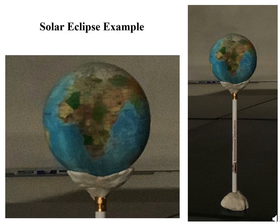Since my model Moon is slightly too big, I had to move the Earth and Moon a little bit closer to get it to work. Before I did that, the Moon cast too big of a shadow and the whole Earth was dark. You may have to make a similar adjustment to your Earth-Moon distance to make this work out for the objects that you use.